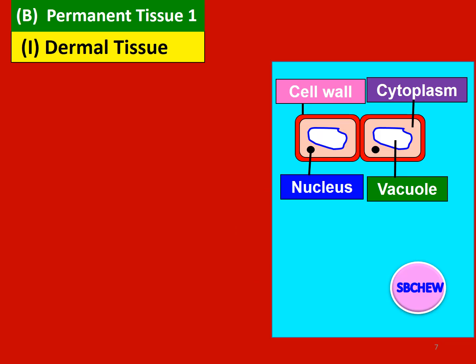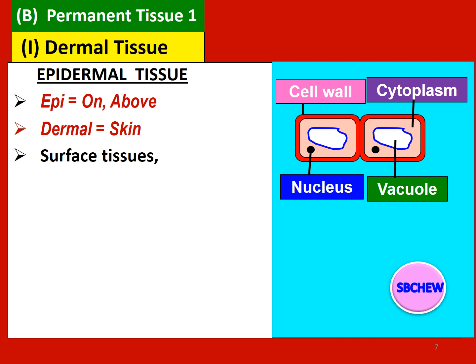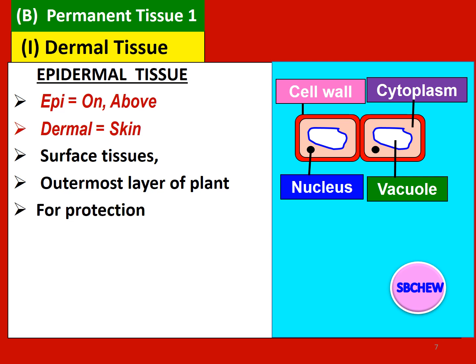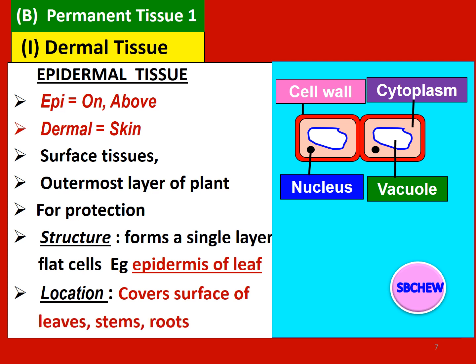The first type of permanent tissue is the dermal tissue. An example of the dermal tissue is the epidermal tissue. "Epi" means on and "dermal" means skin, so epidermal tissues are surface tissues and they form the outermost layer of the plant body — something like skin. The epidermal tissues are used for protection against injuries, and their structure is that they form a single layer of flat cells. For example, the epidermis on the leaves of plants. Their location is that it covers the surface of leaves, stems, and roots.